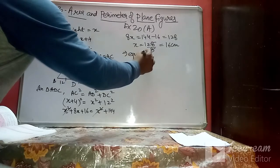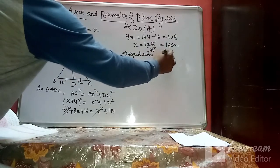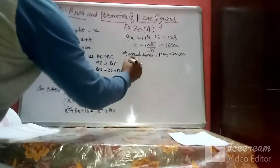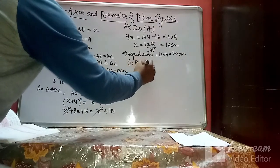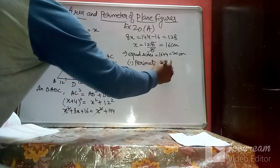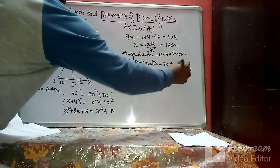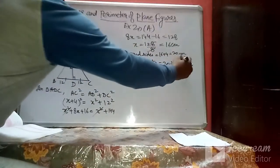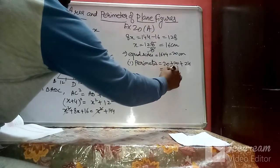The equal sides are x + 4 = 20 cm. The perimeter is 20 + 20 + 24 = 64 centimeters.